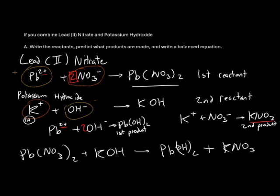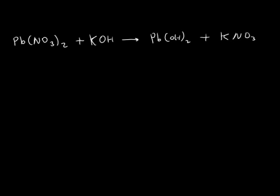Once we've figured out all of our reactants and all of our products, we can balance the equation. To balance this equation, we'll write lead as our first atom, nitrate as our second piece, potassium as our next atom, and then hydroxide as its own piece. We do not need to split the nitrate into nitrogens and oxygens, and we do not need to split the hydroxides into hydrogens and oxygens. Since nitrate appears as a distinct piece on the left side and again on the right side, we can let the nitrate stay together. The same is true for the hydroxide.